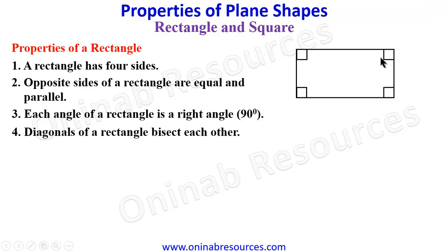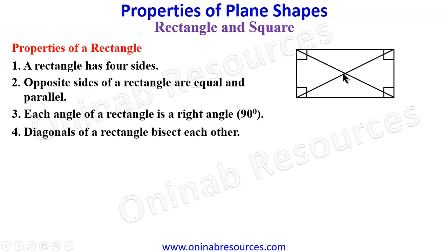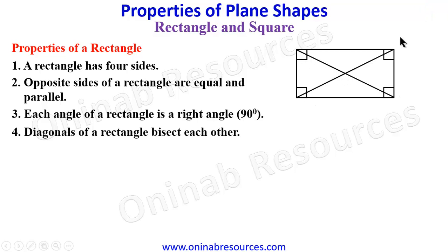A diagonal is the line that joins two vertices of the shape. From this vertex to this vertex we have a line, and from this vertex to this vertex we have another line — they are called the diagonals. The rectangle has two diagonals. They meet at the center, bisecting each other, meaning from the center to each edge they are equal.